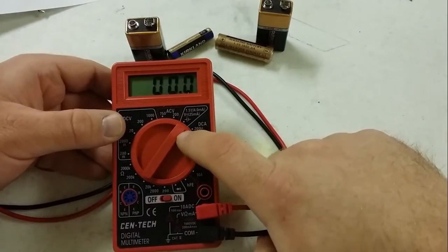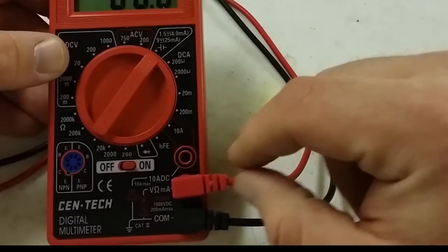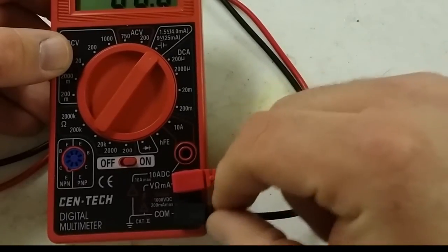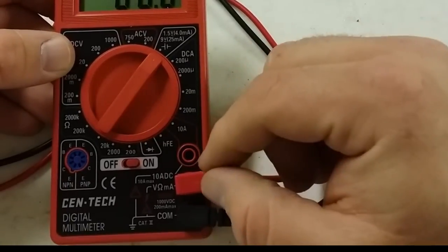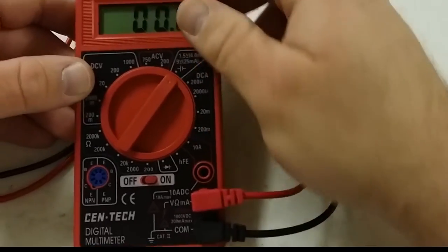So you'll have that set to that setting with the dot pointing there. Then you'll have the red in the VMA port and the black in the COM port. So the red will be the positive and the black will be the negative.